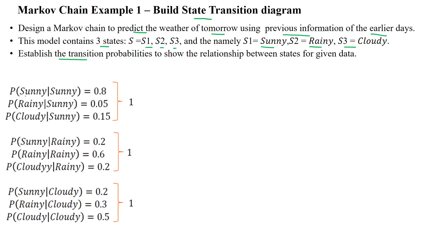The probability of the next state being sunny given the current state is sunny is 0.8. The probability of the next state being rainy given the current state is sunny is 0.05, and the probability of the next state being cloudy given the current state is sunny is 0.15.